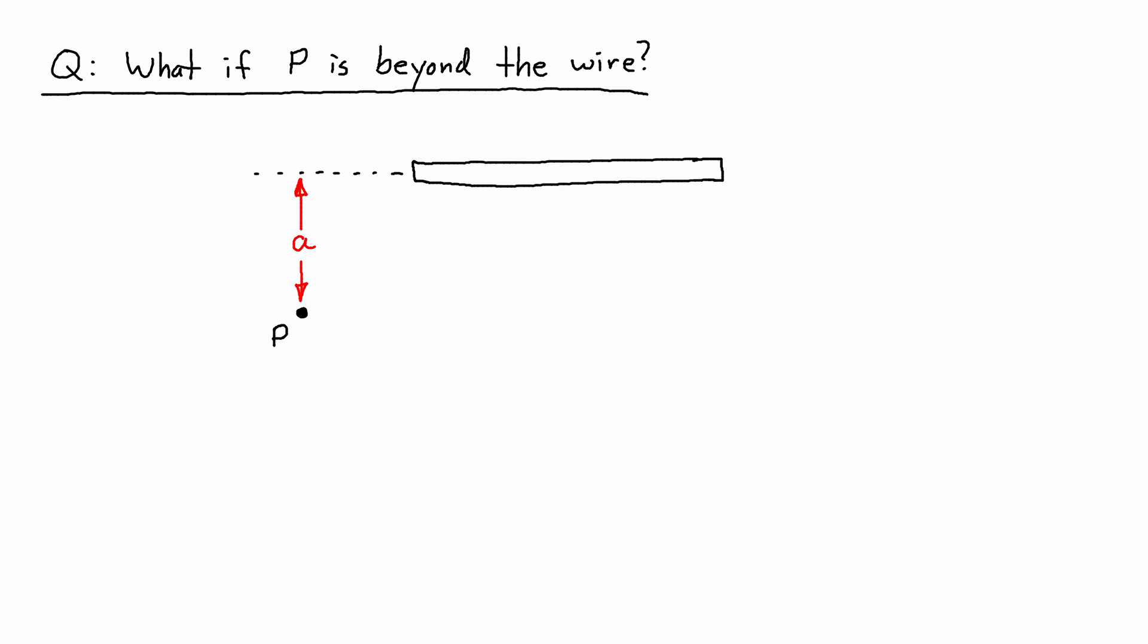Theta 2 is still going to go all the way to the end of the wire. So we can measure theta 2 down in here like this. But what do we put for theta 1?